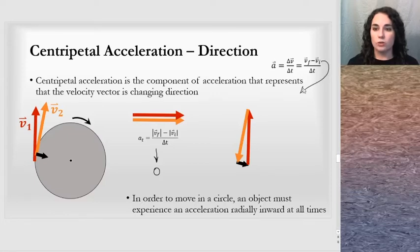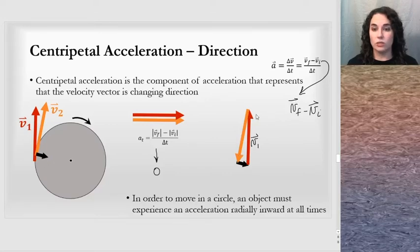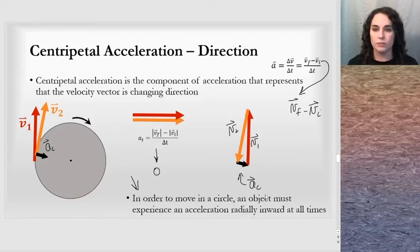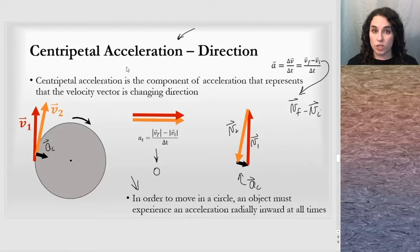When we subtract V final minus V initial in a vector way — here's V initial, and I subtract V2 by taking the negative of V2 — the result shows the direction of centripetal acceleration pointing inward. In order to move in a circle, an object must experience an acceleration radially inward at all times, and that is what we define as centripetal acceleration. The direction is radially inward.